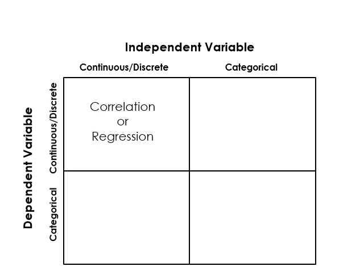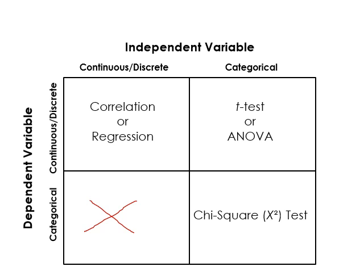If you have a continuous independent variable and a continuous dependent variable, you'd use correlation or regression — measuring the response in the dependent variable as the independent variable changes continuously. If you have categorical independent data — say high elevation and low elevation sites — and a continuous response like biomass or species richness, that's where you'd use a t-test or ANOVA to see if there are significant differences. If you have two categorical variables, that's where you do a chi-square test, which we'll cover in a later lab.